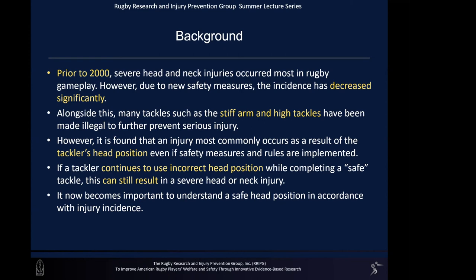Alongside new safety measures, stiff arm tackles and high tackles have been made illegal in the game, as researchers found these are in extreme correlation with severe head and neck injuries. However, it is found that an injury most commonly occurs as a result of a tackler's head position. A correct head position means wrapping arms around the opponent with the head located under the person's left or right arm — pushing the head out of any direct contact with the opponent, the ground, or the ball.